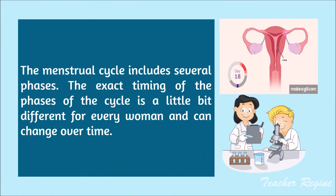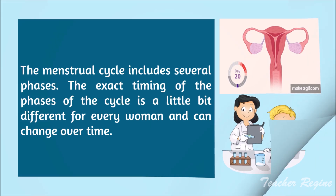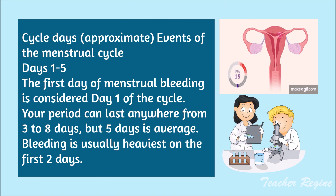How does the menstrual cycle occur? The menstrual cycle includes several phases. The exact timing of the phases is a little bit different for every woman and can change over time. Days 1 to 5: the first day of menstrual bleeding is considered day 1 of the cycle. Your period can last anywhere from 3 to 8 days, but 5 days is average. Bleeding is usually heaviest on the first 2 days.